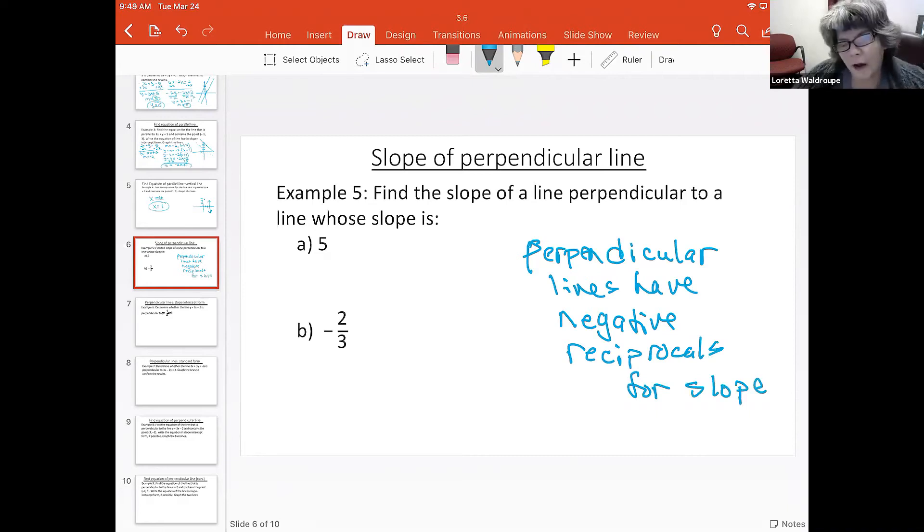This means you give it the opposite sign and you flip it over. So five is understood to be over one. If we flip it over and give it the opposite sign, the slope of the perpendicular line would be negative one-fifth. Negative two-thirds becomes positive and you flip it over to get positive three over two for the slope of that line.